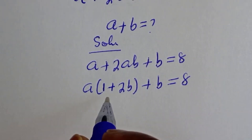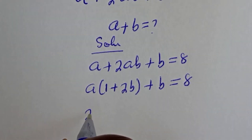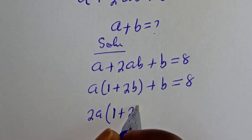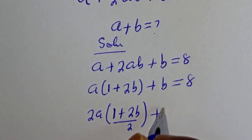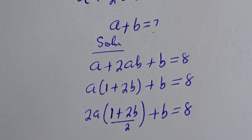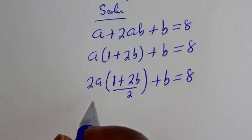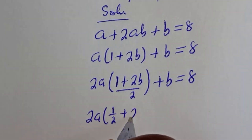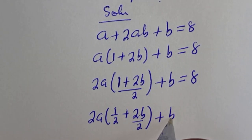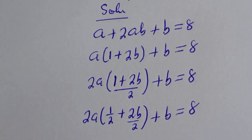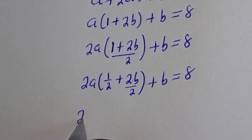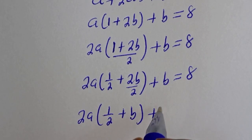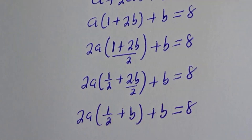Note that 2 divided by 2 is equal to 1. The left hand side can be seen as 2 times a bracket: 1 plus 2b over 2 plus b is equal to 8. This is 2a bracket 1 over 2 plus 2b over 2 plus b is equal to 8. Then this is 2a bracket 1 over 2 plus b plus b is equal to 8.